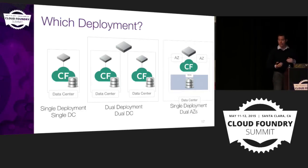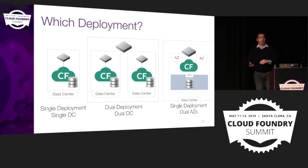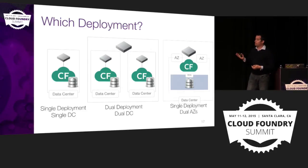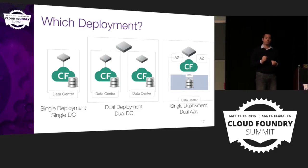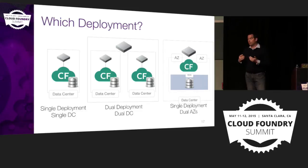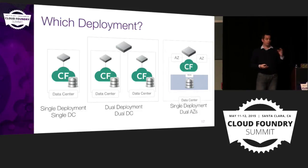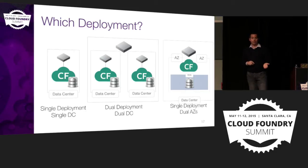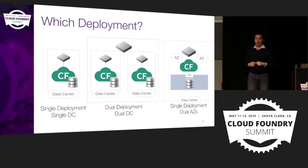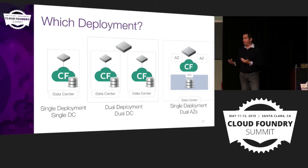Choosing a deployment topology comes down to many factors — there's no one-size-fits-all. For many companies, a single deployment in a single data center with good HA within that data center and a solid disaster recovery procedure is sufficient. Others will need higher levels of HA: a dual deployment across different IaaSs or regions is easy to deploy but hard to administer and develop for, though a CI/CD pipeline helps. A single deployment split across AZs is complex to set up but simpler to operate once deployed.